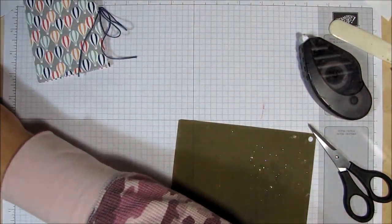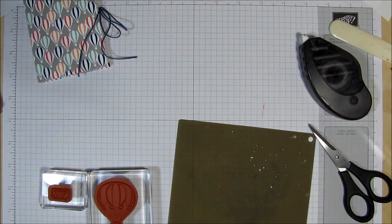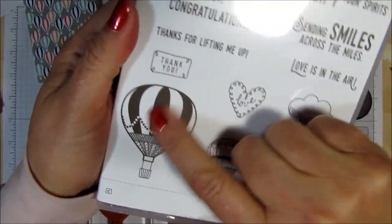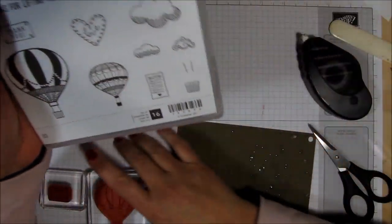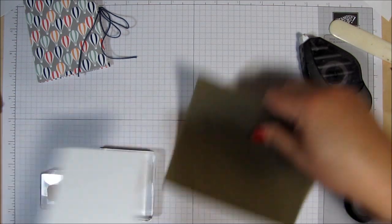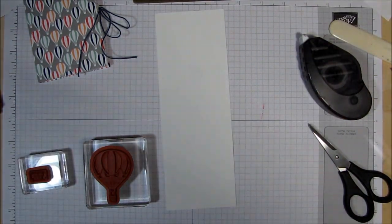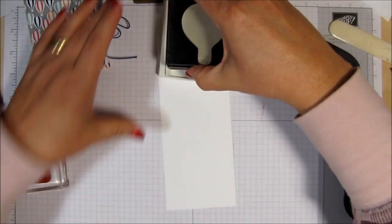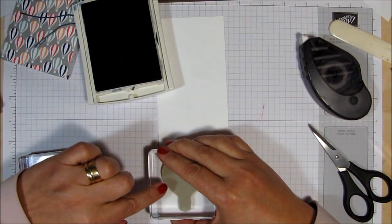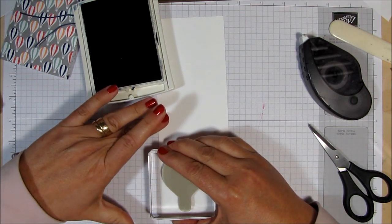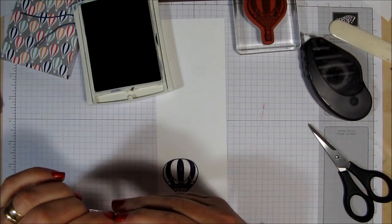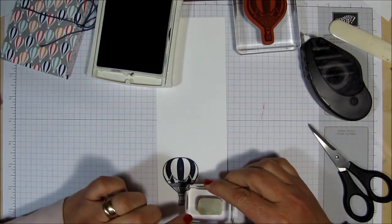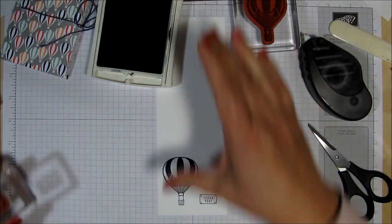Now let's decorate the top. So what I have is that stamp set which is called Lift Me Up. And I'm going to be using this little balloon right here to decorate the front. So let's get some whisper white card stock and I am going to bring down my night of navy because that's the color that I want to use. And I'm going to just go ahead and stamp that. Very nice. And then I'm also going to stamp the sentiment which says thank you because I am very thankful for my customers. And there we go. Let's close it.